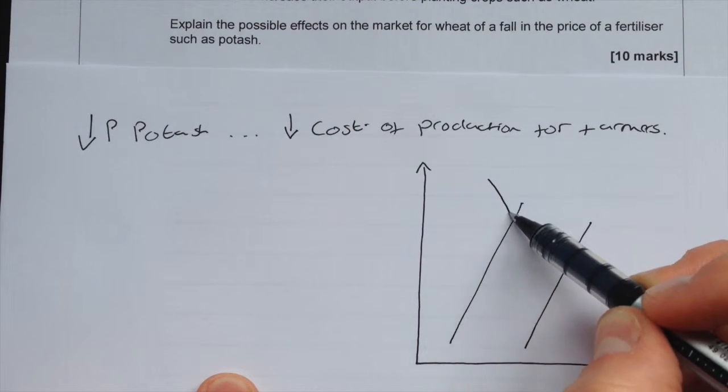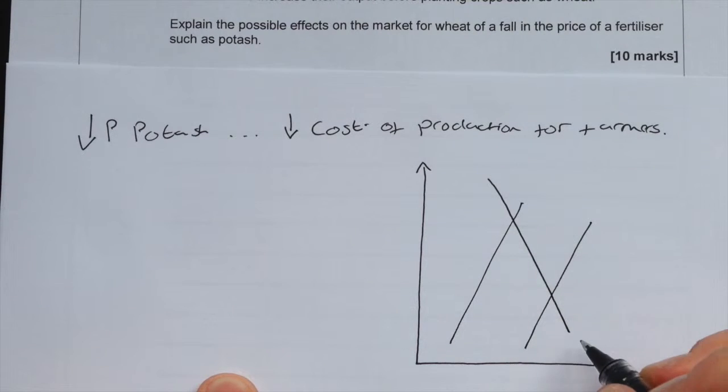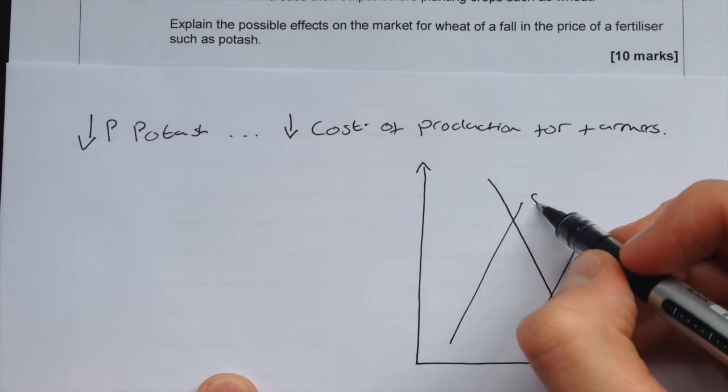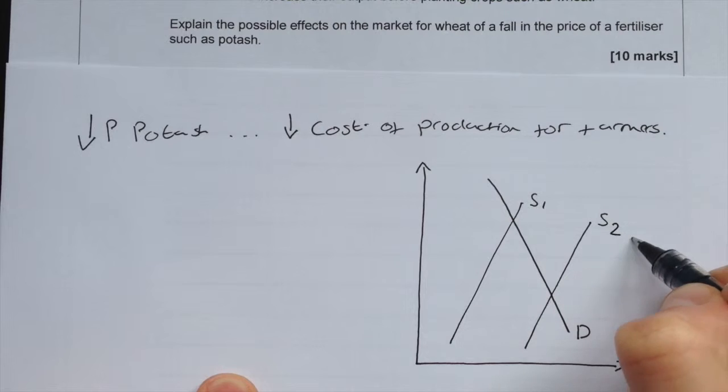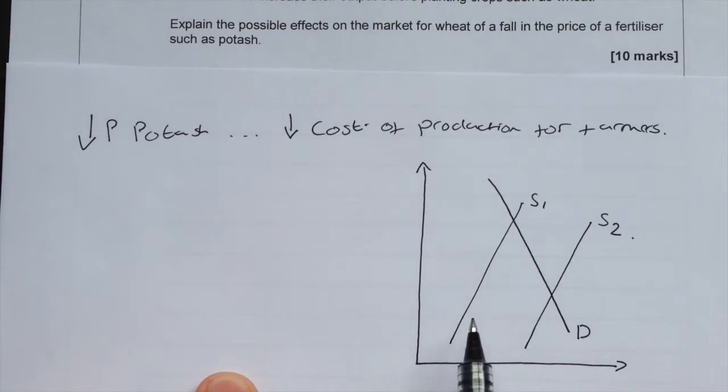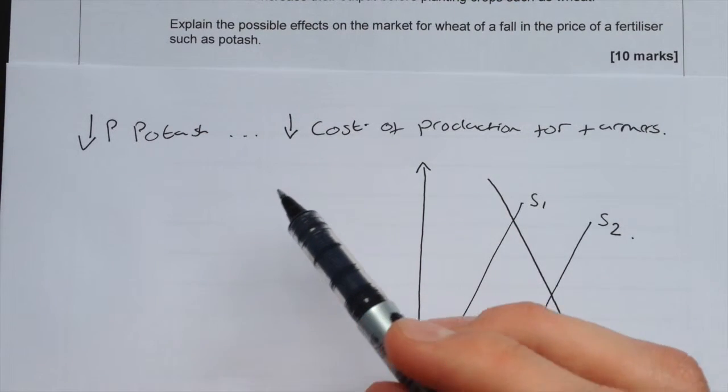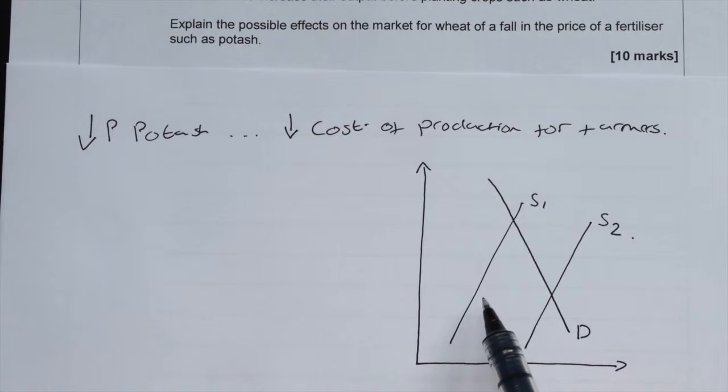We'll draw a demand fairly inelastic here and supply also fairly inelastic. So our supply curve, because potash has decreased in price, the supply curve shifts outwards.